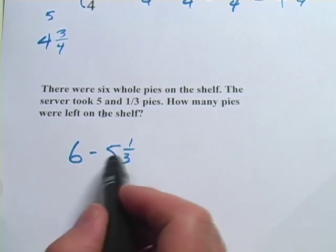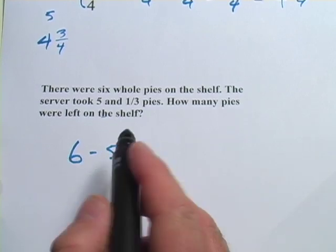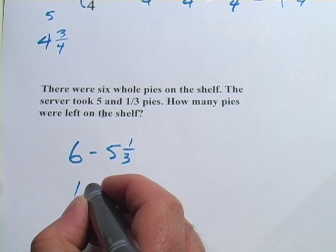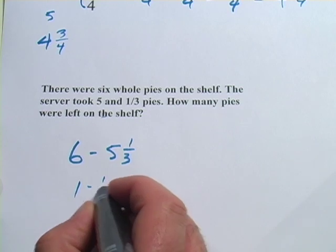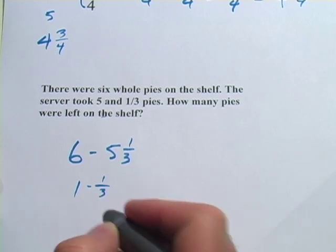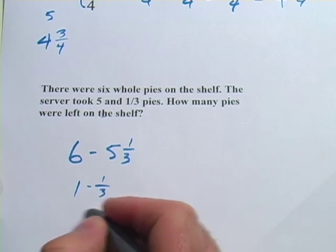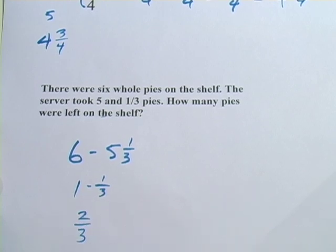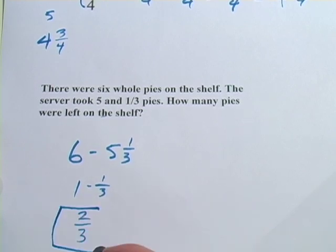Well, 6 minus 5 leaves 1. So 1 minus 1 third — if you take 1 third away from a whole, you just get 2 thirds of a pie left. That's how to do it kind of in your head.